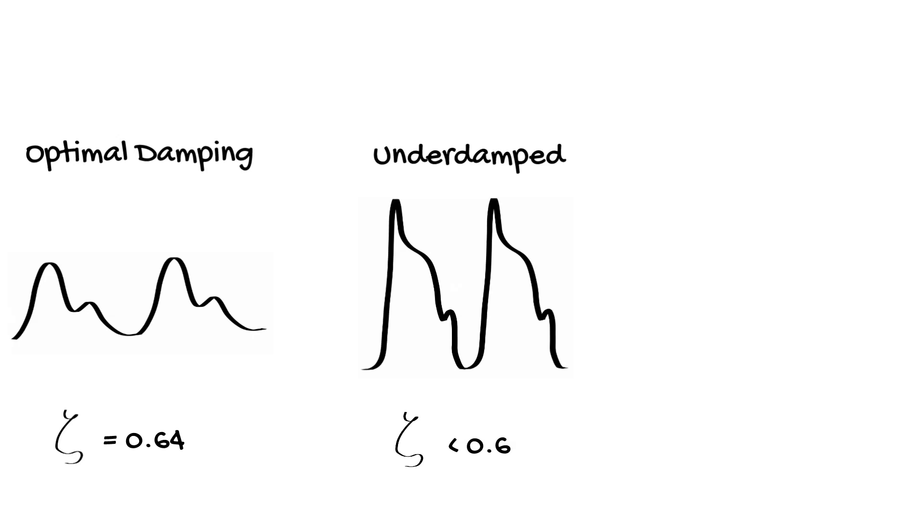More commonly in arterial line systems there is too much damping or an over-damped system. In this case, the mean arterial pressure will again remain accurate, but the systolic and diastolic pressures will be closer together. This commonly occurs with air in the line or when long or compliant tubing has been used.